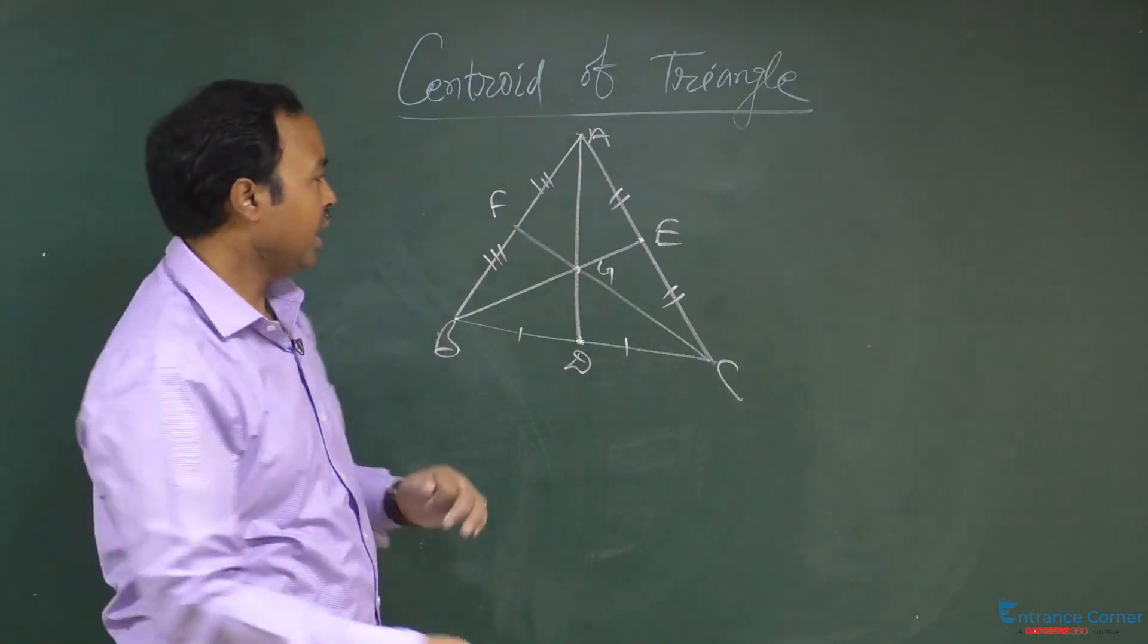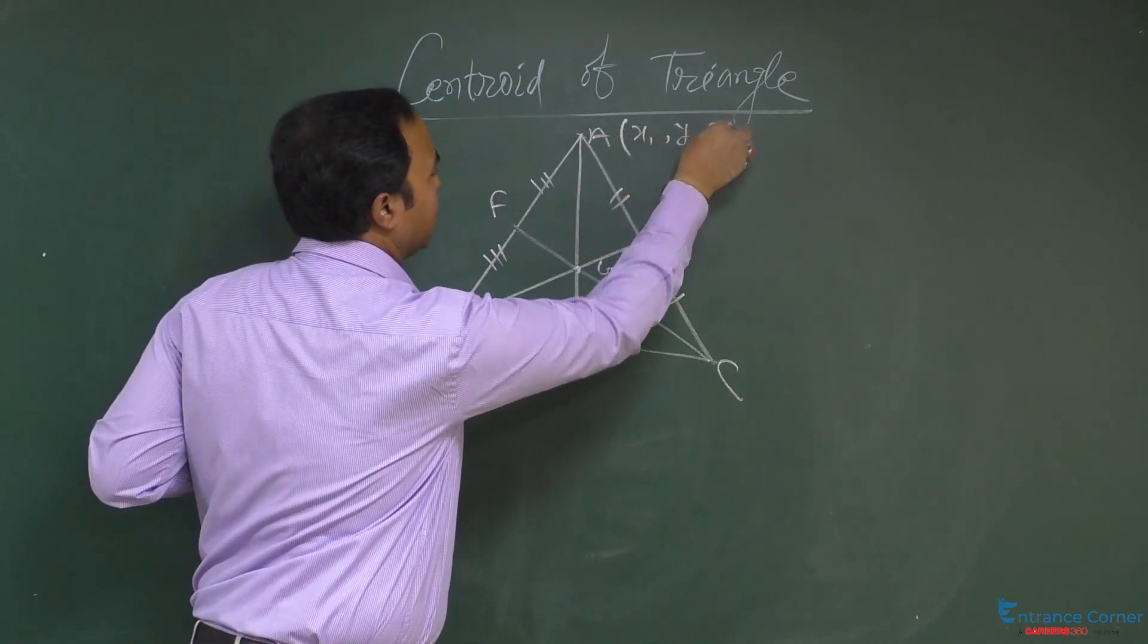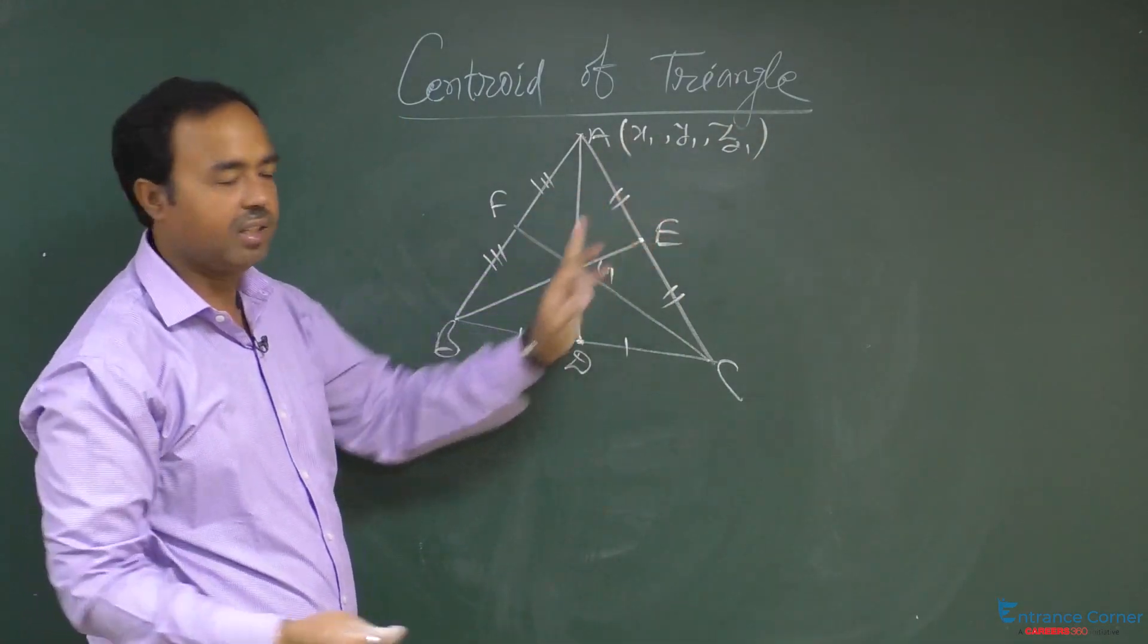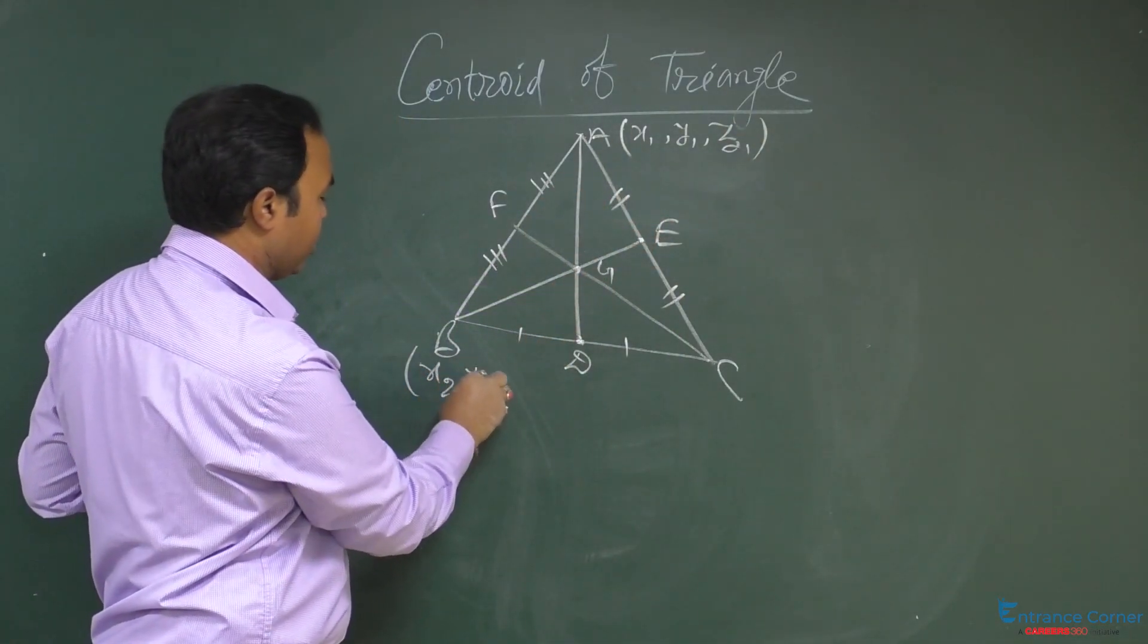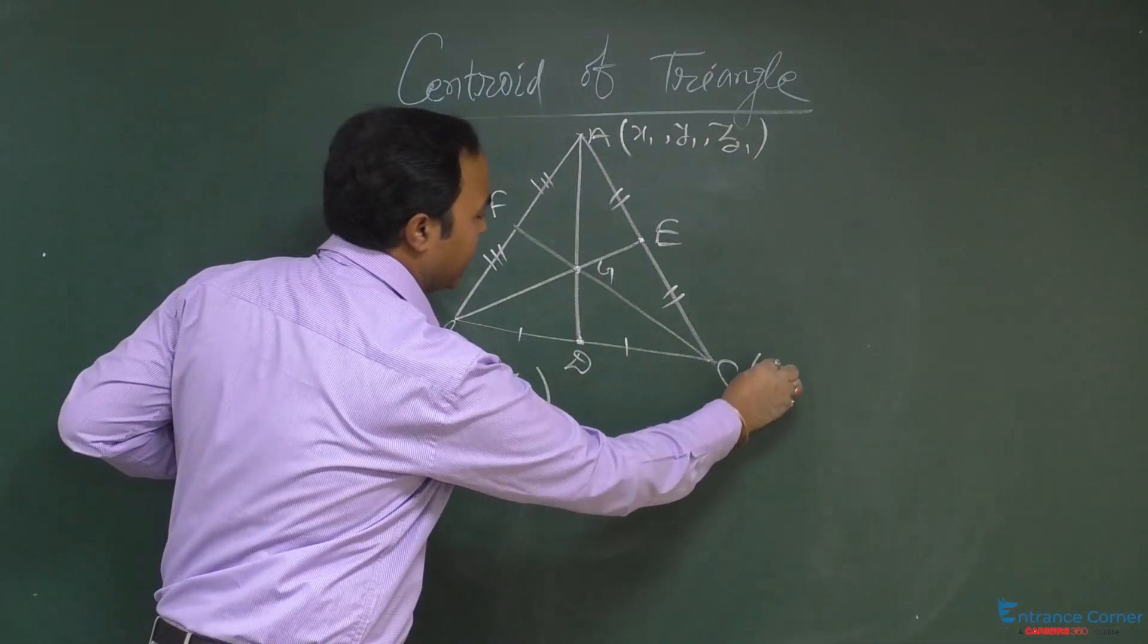So, if the coordinate of all the three vertices are given as x1, y1, z1, x2, y2, z2 and x3, y3, z3.